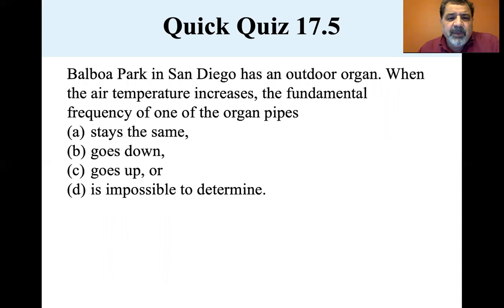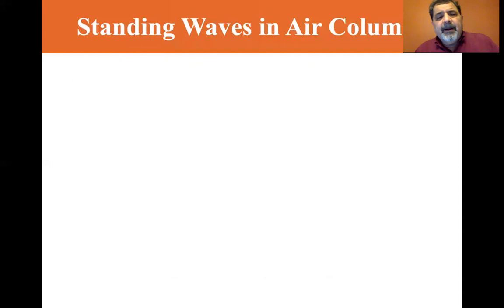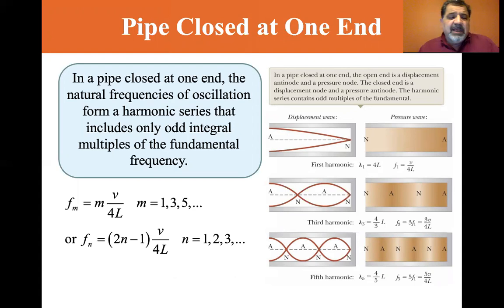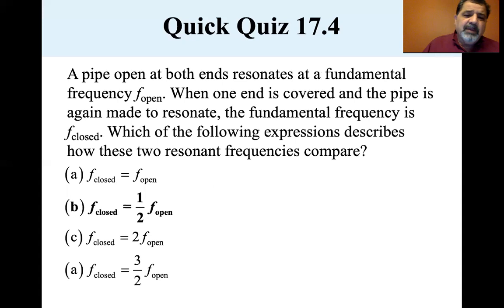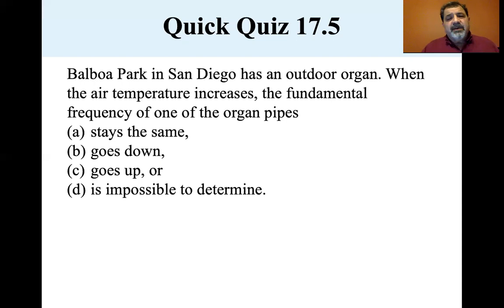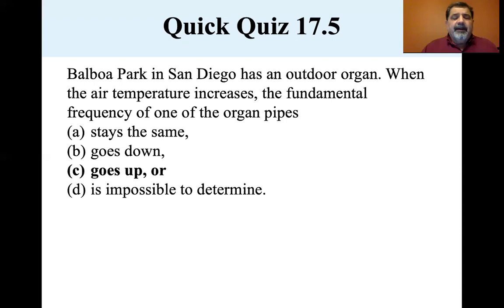So Balboa Park in San Diego has an outdoor organ. When the air temperature increases, the fundamental frequency of one of the organ pipes... now remember the speed of sound increases as the air temperature increases. If the speed of sound increases, look at that, the velocity is in the numerator. So the speed of sound goes up with temperature, then the frequency goes up with temperature. Let's go back to the question. When the air temperature increases, the fundamental frequency of one of the organ pipes, it goes up. If the air temperature increases, the frequency increases. Okay, next we're going to do beats.